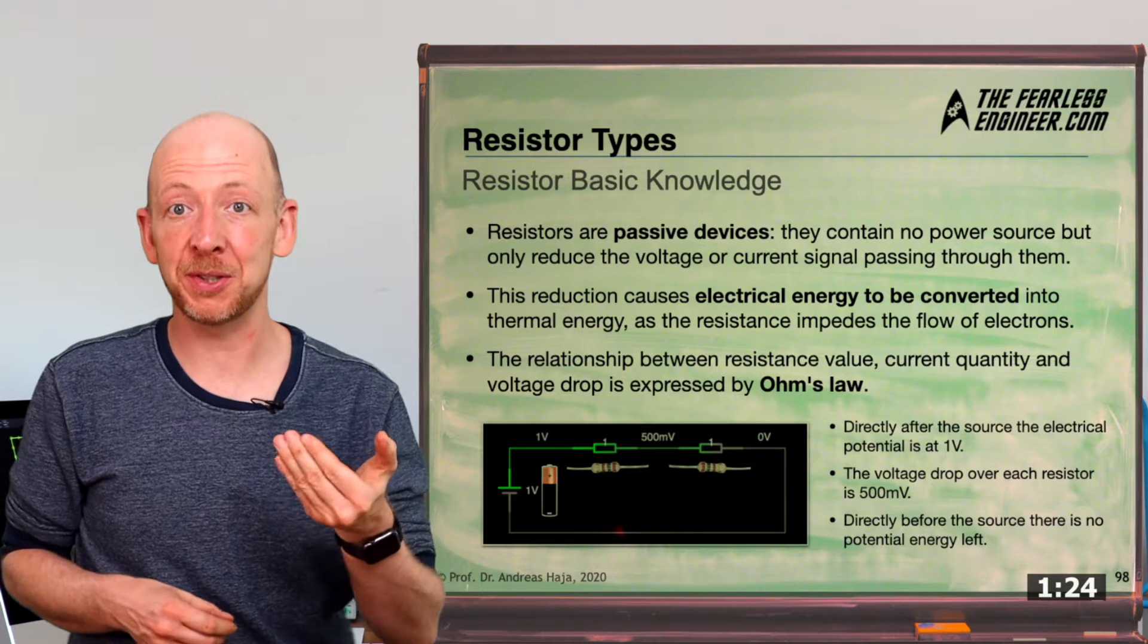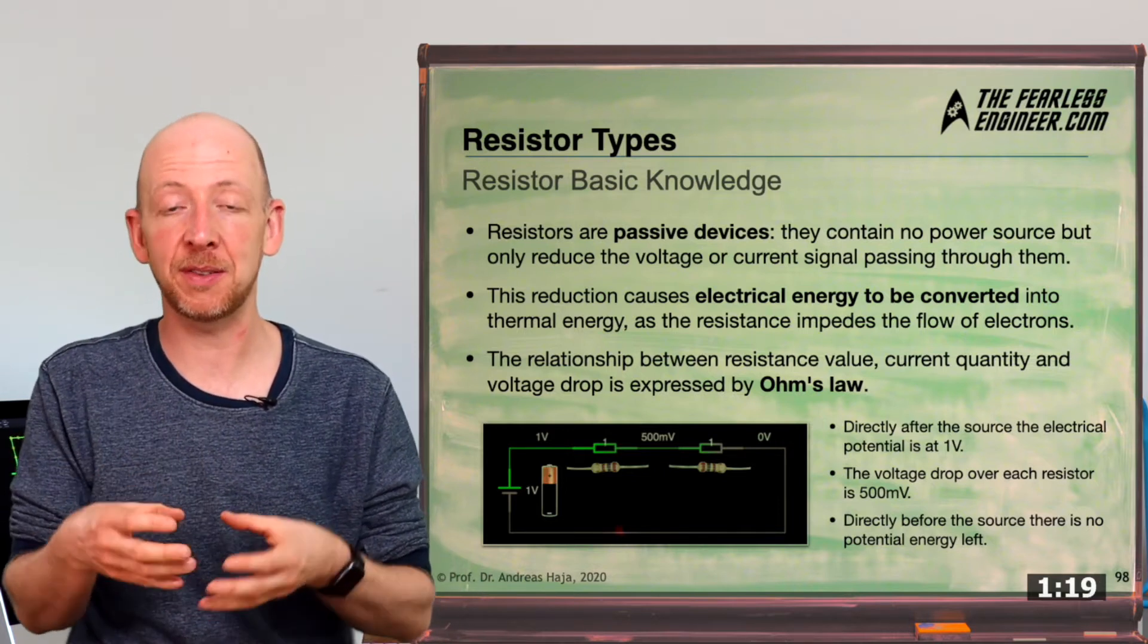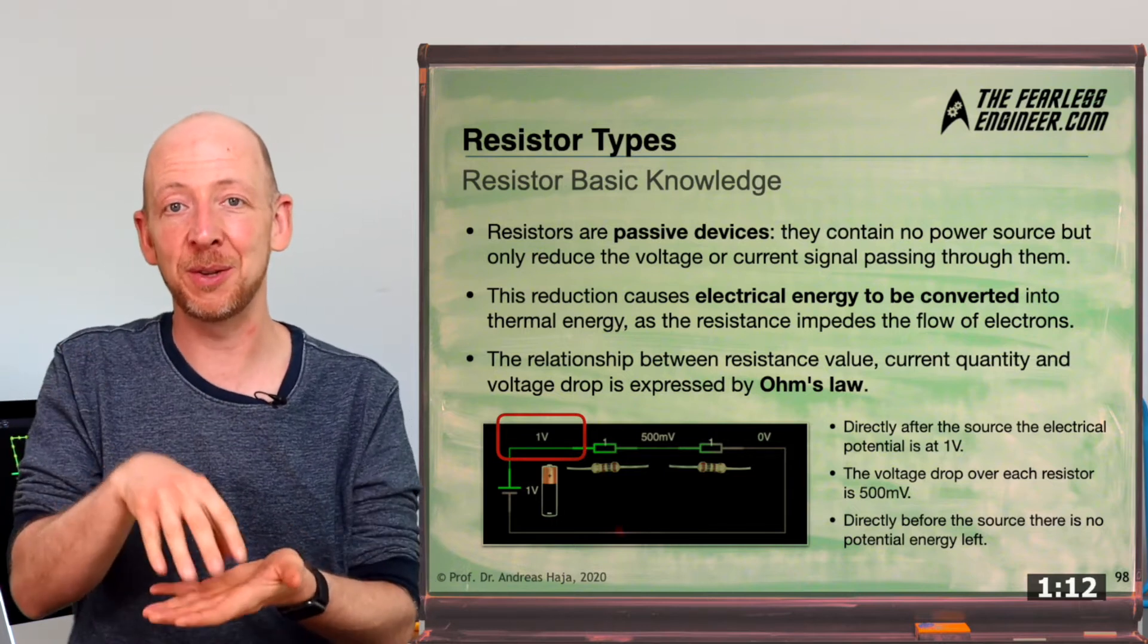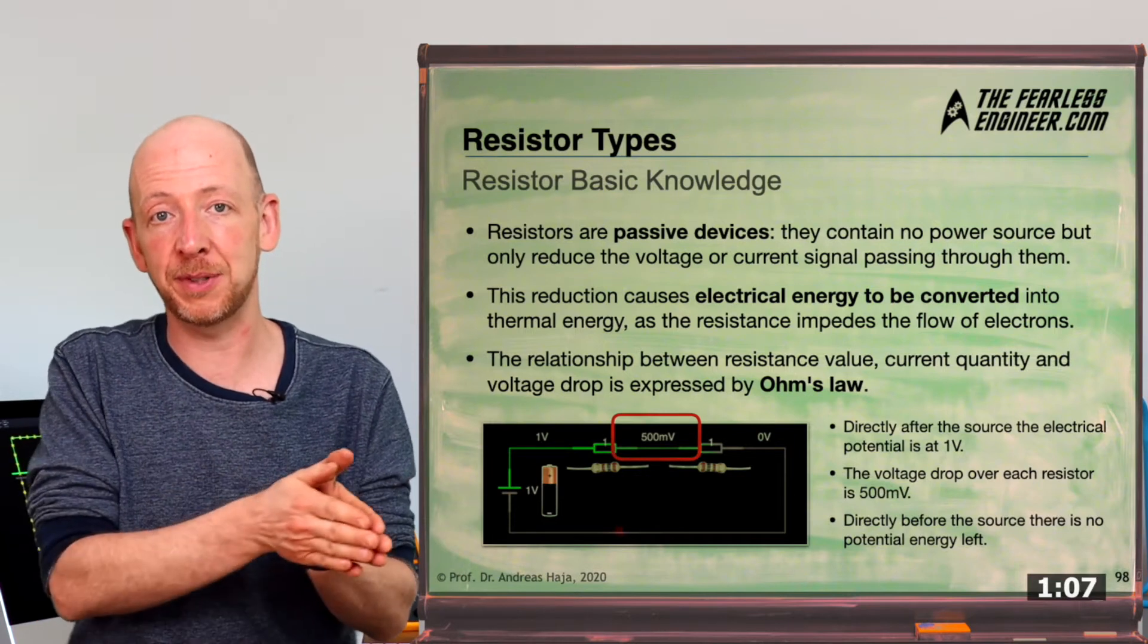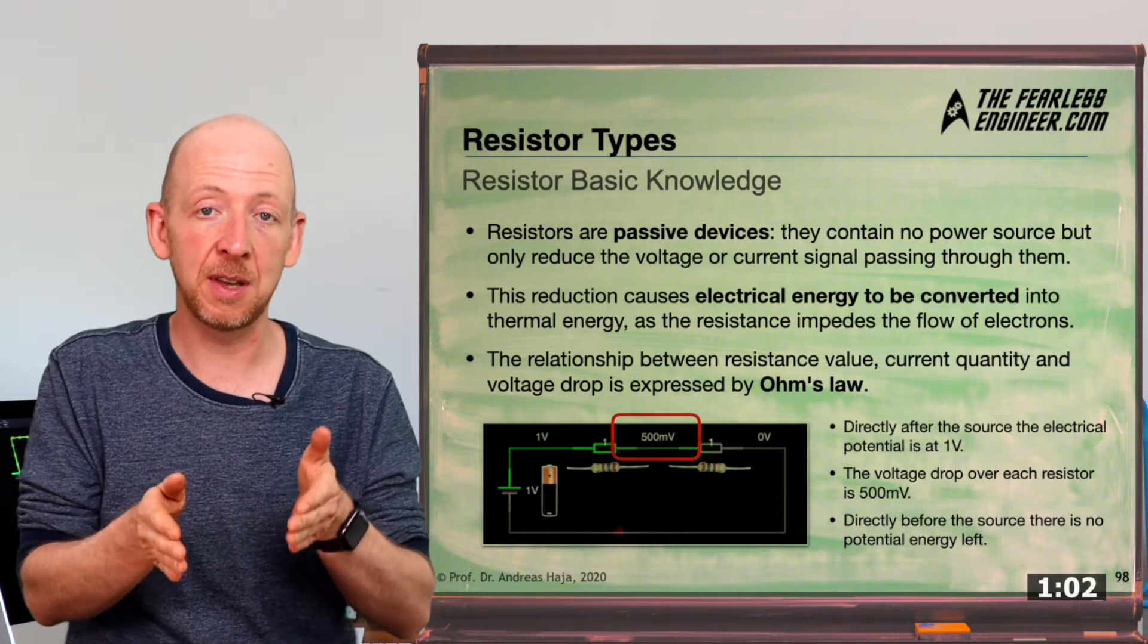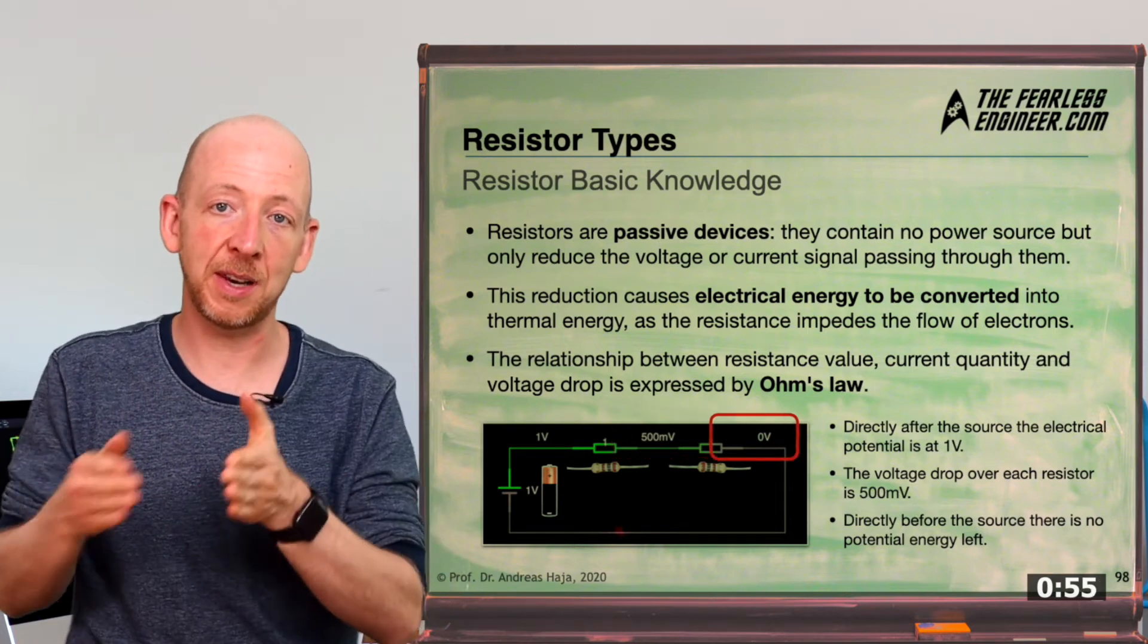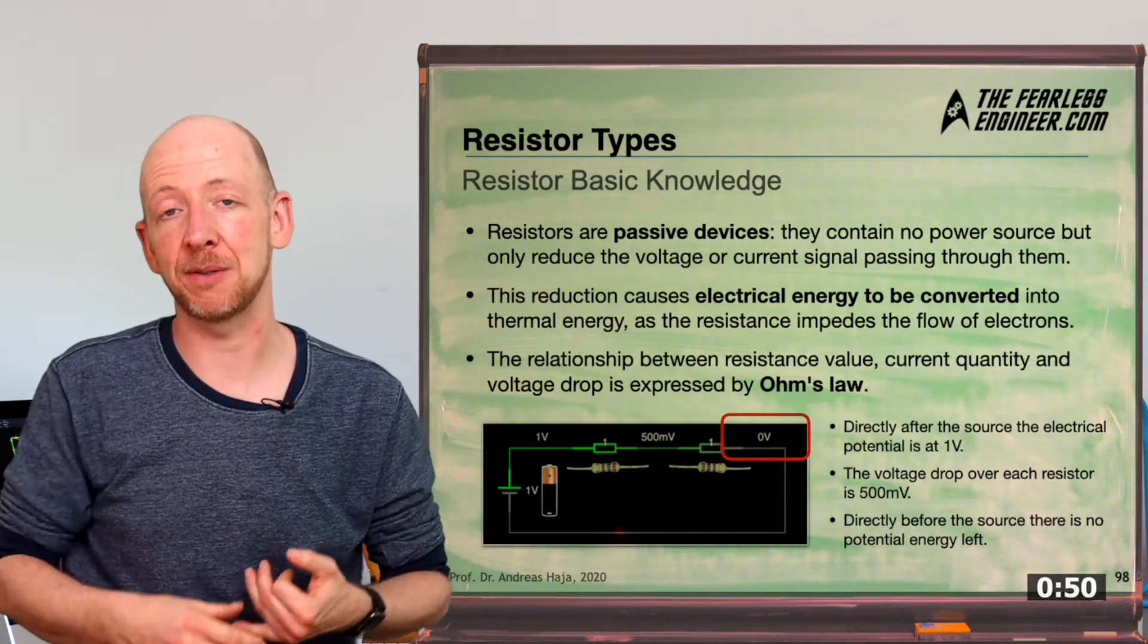On the circuit on the left side, you can see a voltage source which is connected to two resistors of one Ohm each. And in the simulation, you can see that the electric potential directly after the source and before the first resistor is at a level of one volt. And after the current has passed through the first resistor, the electric potential drops down to 500 millivolts, which means that the voltage drop across the resistor is 500 millivolts as well. The same happens again with the second resistor.